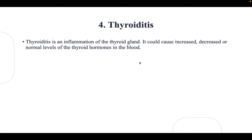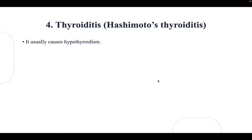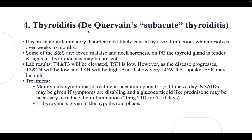Thyroiditis is an inflammation of the thyroid gland and can cause increased, decreased, or normal thyroid hormone levels. The most common is Hashimoto's, which usually causes hypothyroidism. De Quervain's, or sub-acute thyroiditis, is an acute inflammatory disorder caused by viral infection that resolves over weeks to months. Symptoms include fever, malaise, and neck soreness. The thyroid gland may be tender on examination with signs of thyrotoxicosis. Lab results initially show elevated T3 and T4 with low TSH; as the disease progresses, T3 and T4 become low and TSH becomes high. Radioiodine uptake is very low or absent, and ESR is elevated.